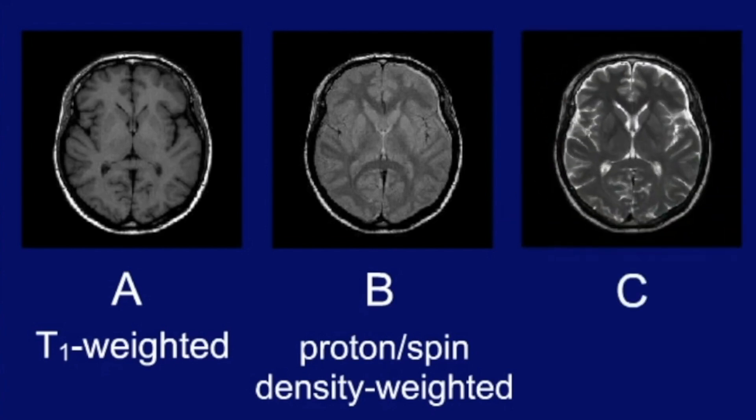In C, CSF has a higher signal intensity than grey and white matter. The image is T2 weighted.